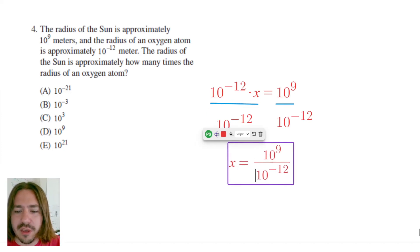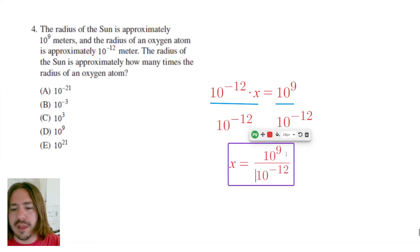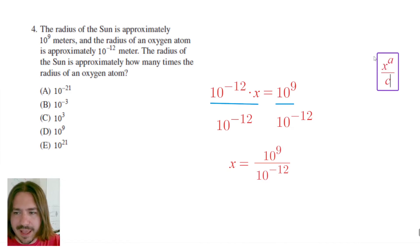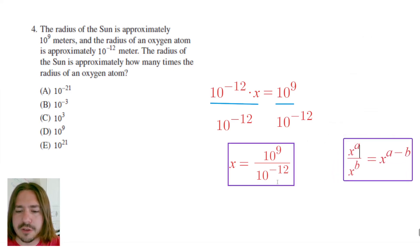So here we've got a quotient of two powers that have the same base. Anytime you're dividing powers that have the same base, the way to simplify that is to keep the base the same and simply subtract the exponents. So we're going to use this property here to subtract and get our final answer.